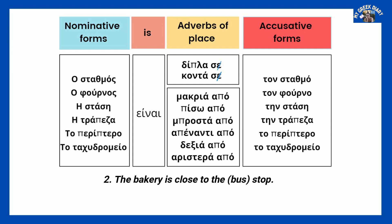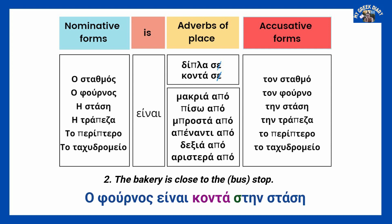DIO. OFURNOS INE KOTA STIN STASI. Here we have done the same. OFURNOS is in the accusative form. INE KOTA STIN STASI. In this case, STASI is a feminine noun, so the accusative is a bit different — STIN — in combination with the preposition SE.